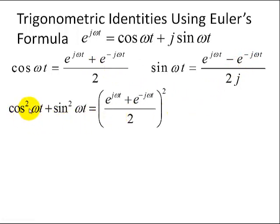Such as cosine squared omega t plus sine squared omega t, and we'll see that's equal to 1. You can think of this as the Pythagorean theorem, x squared plus y squared equals c squared, where x is cosine omega t, sine is omega t, and the hypotenuse has a radius of 1, or length of 1.